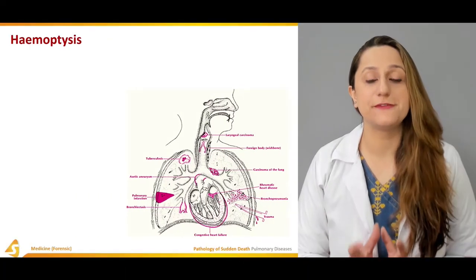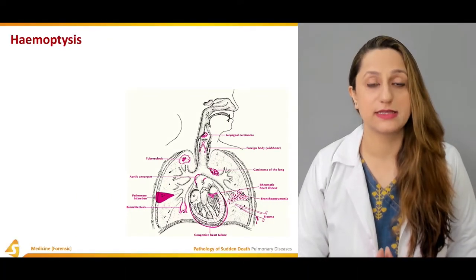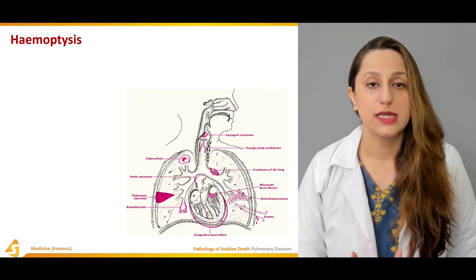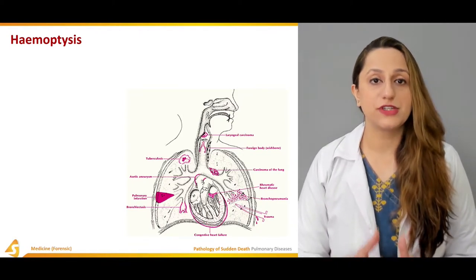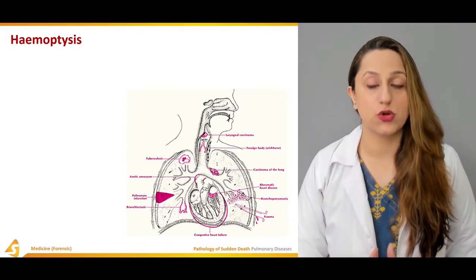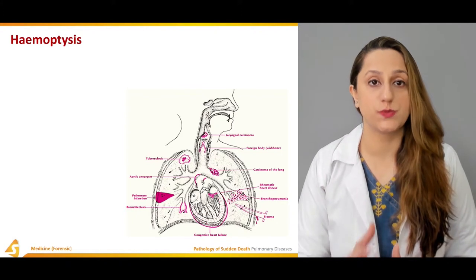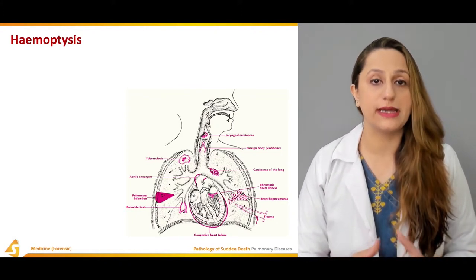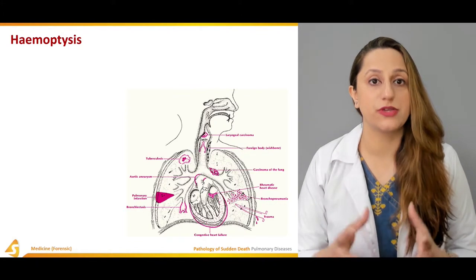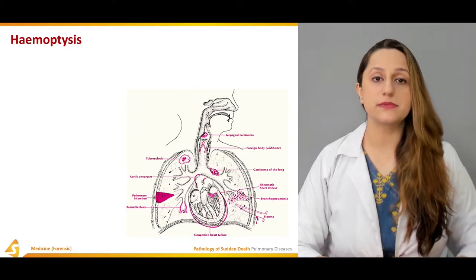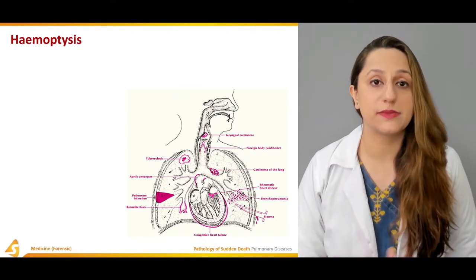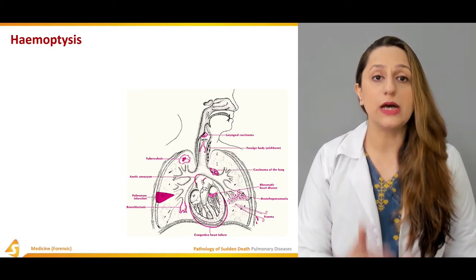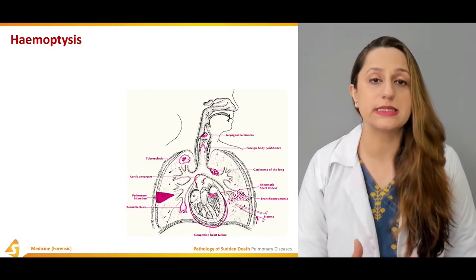Haemoptysis is basically defined as blood in sputum or blood on coughing. Sometimes after haemoptysis, the person dies immediately or after that haemoptotic reaction. This is sometimes seen as a leading cause of death in a lot of cases.